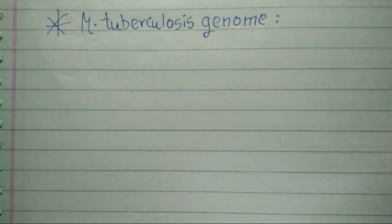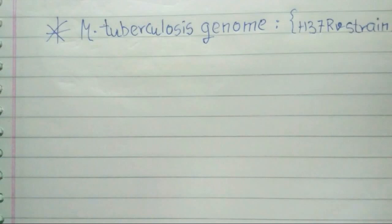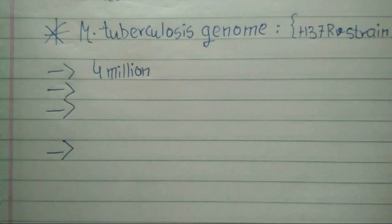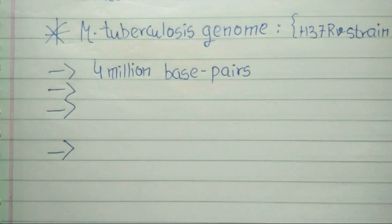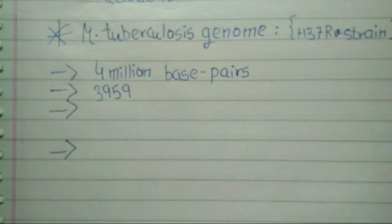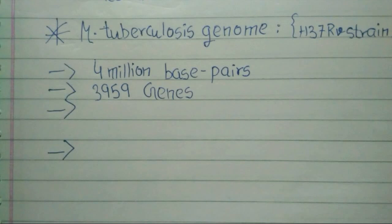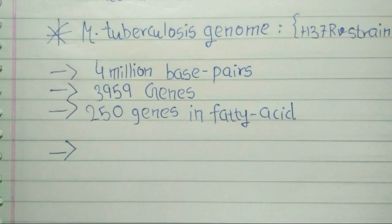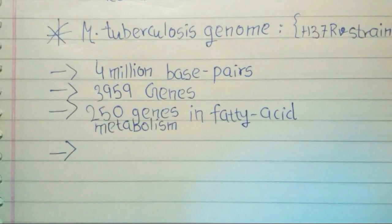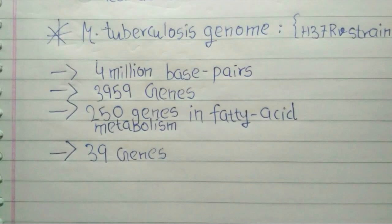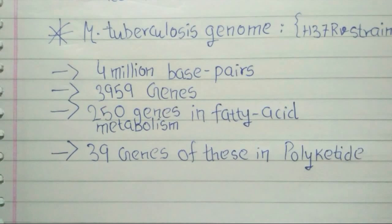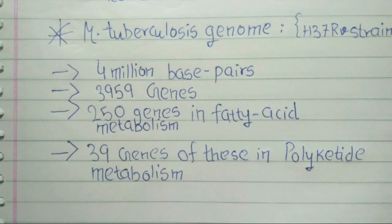The genome of the H37Rv strain of M. tuberculosis has a size of 4 million base pairs with 3,959 genes. 40% of these genes have their function characterized, with possible function postulated for another 44%. The genome contains 250 genes involved in fatty acid metabolism, with 39 of these involved in the polyketide metabolism generating the waxy coat. Such a large number of conserved genes shows the evolutionary importance of the waxy coat to pathogen survival.